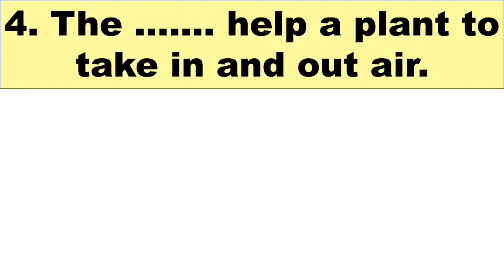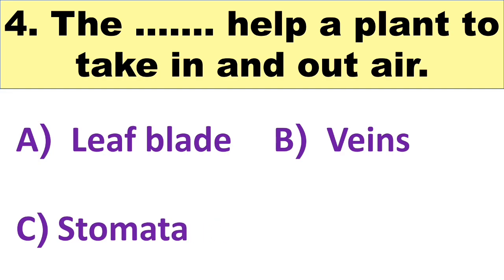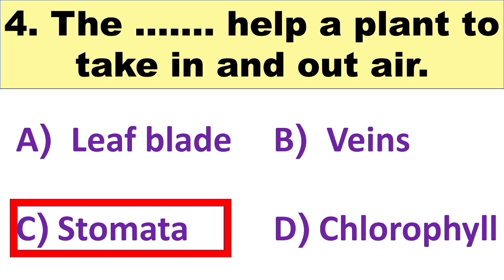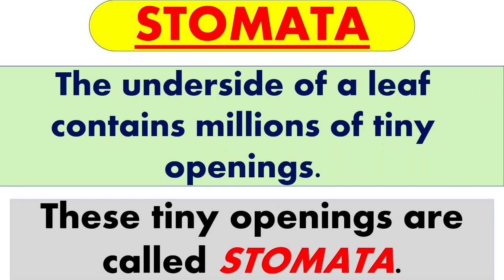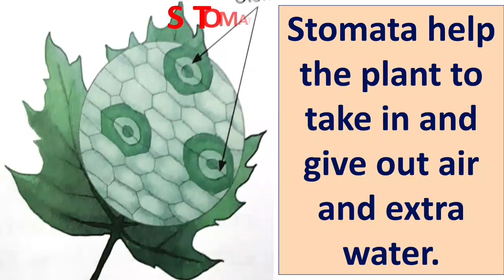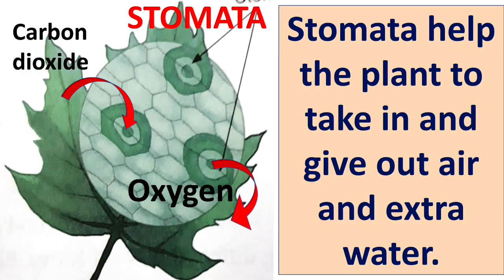The next question is: the blank help the plant to take in and out air. Your options are A. Leaf blade, B. Vein, C. Stomata, and D. Chlorophyll. The right answer is C. Stomata. The underside of a leaf contains millions of tiny openings called stomata. Stomata helps the plant to take in carbon dioxide and give out oxygen and extra water.